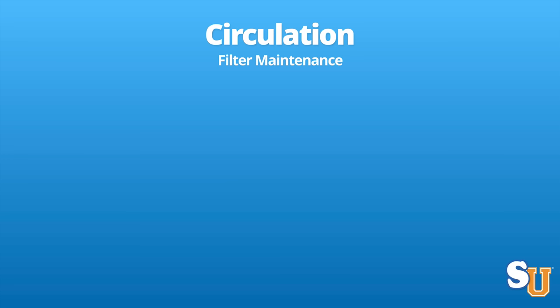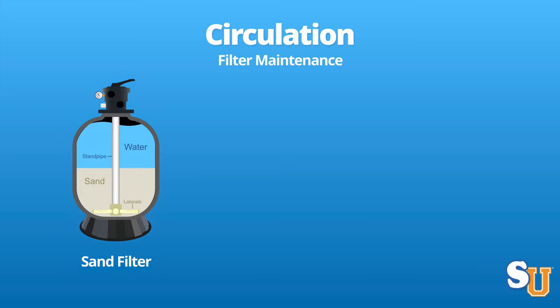Now we're going to talk about filter maintenance because the filter is the heart of your pool. Starting with a sand filter — one of my favorites, very easy to use. You want to backwash it every once in a while, because when pressure builds up, it's clogged and needs to be backwashed — all the gunk the filter has collected gets pushed out through the backwash port. There's a pressure gauge on top of your sand filter. Right after you backwash, note your pressure — it might read between 10 and 15 PSI. If it goes 10 pounds over that, your filter is clogged and needs backwashing.